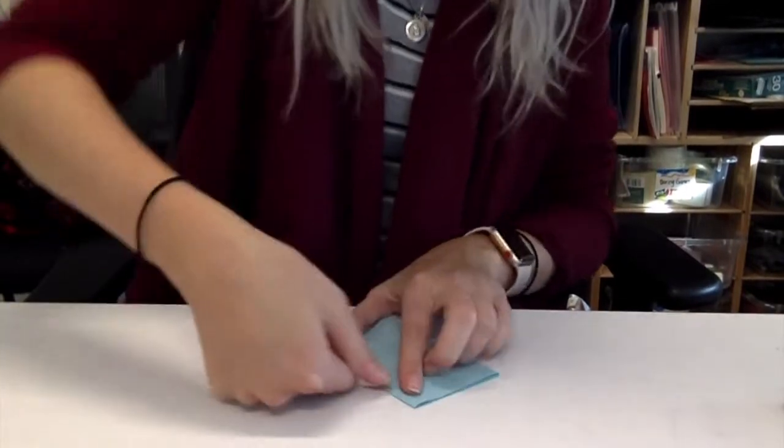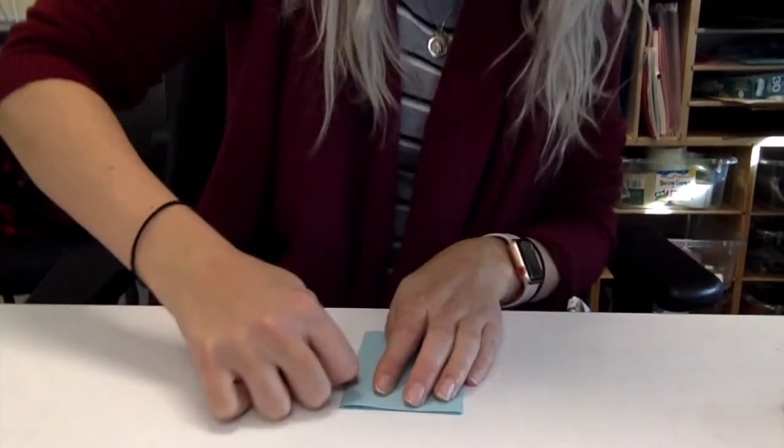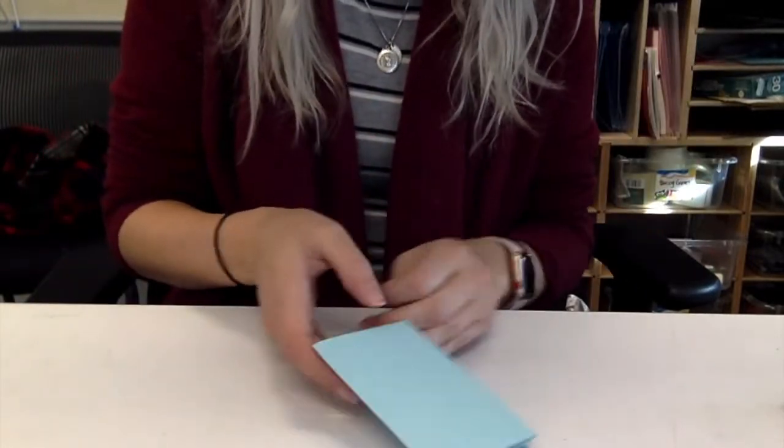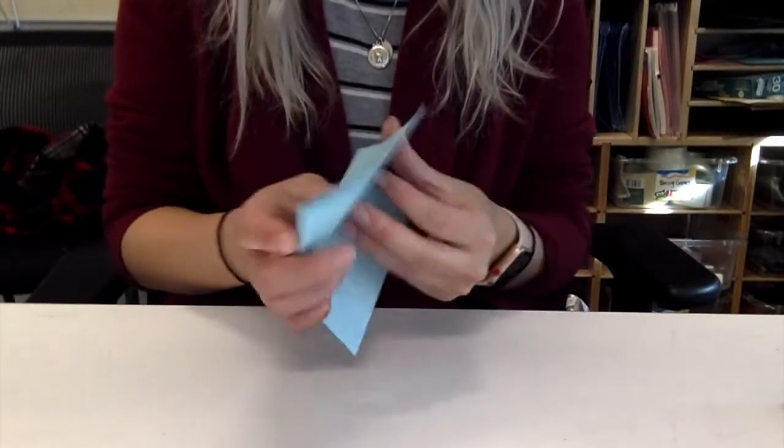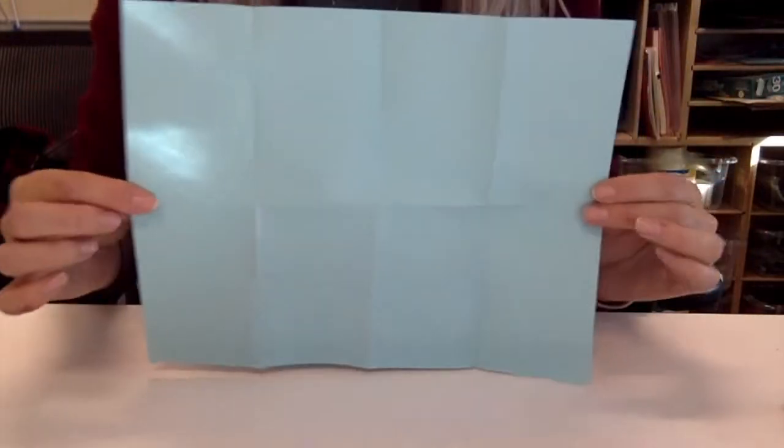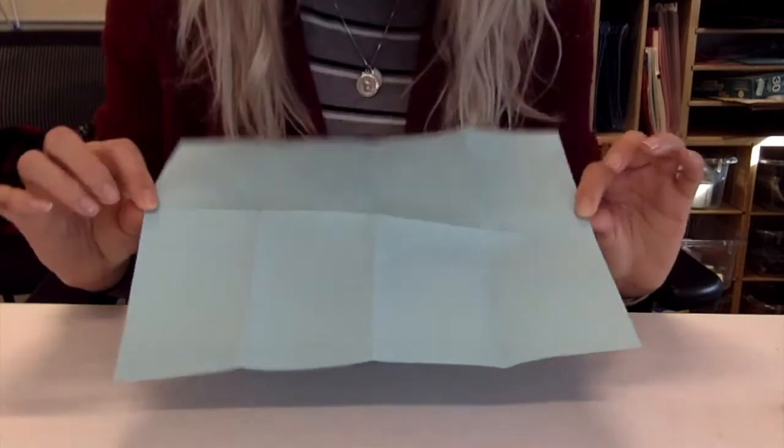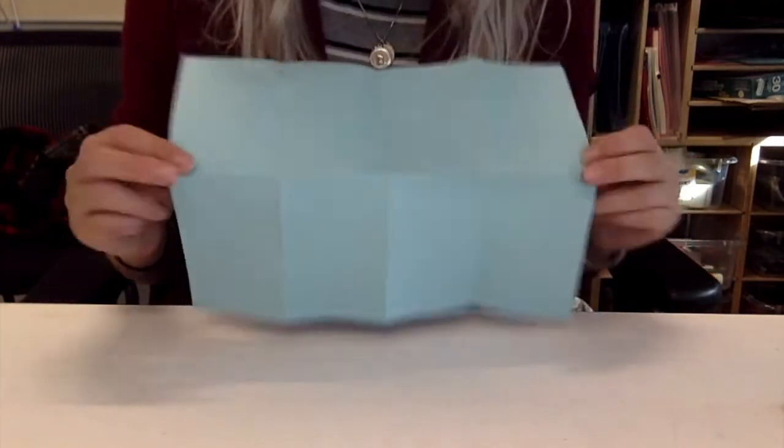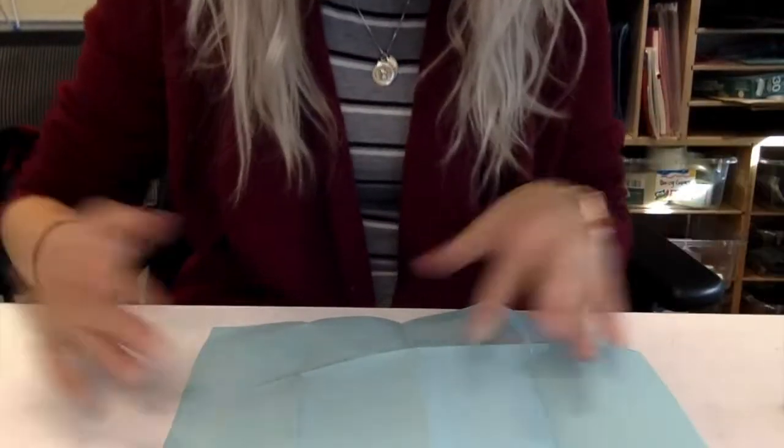The more you crease the edges as you're folding, the better your book will turn out. Then you can open it up, and you should have eight squares - a two by four array, eight squares.